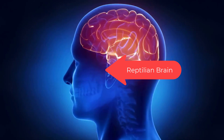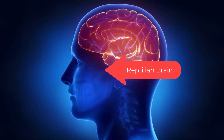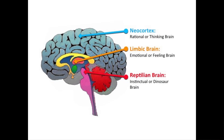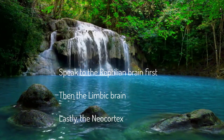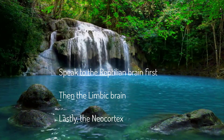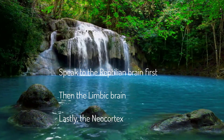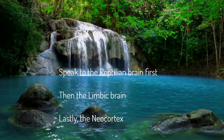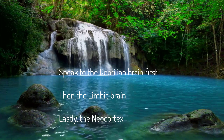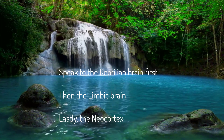The reptilian brain can take into account input from the other brains, but it can also decide faster than the blink of an eye, then use the other brains to justify the decision. It is visual and hardwired into the brain stem. It can make survival decisions before you or other brains can even begin to process the data.